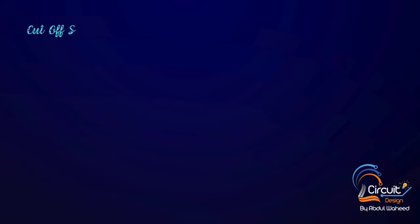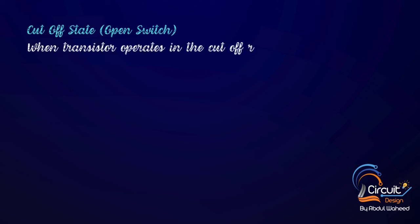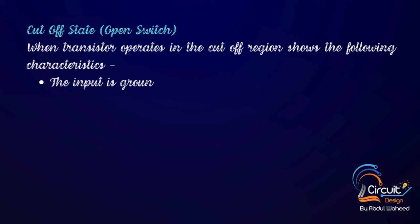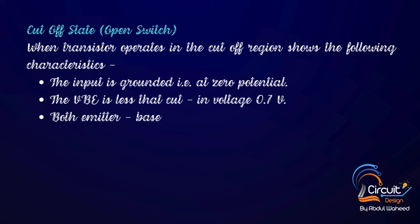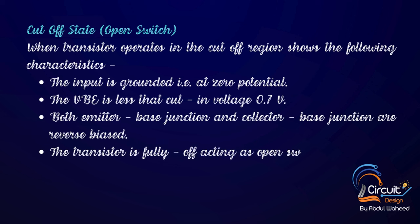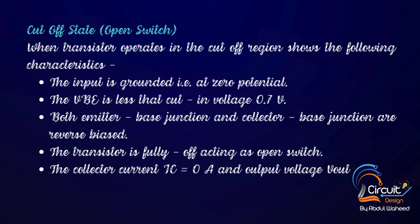Testing the circuit. Cutoff state open switch: when transistor operates in the cutoff region, it shows the following characteristics. The input is grounded, that is at zero potential. The VBE is less than cut-in voltage 0.7 volt. Both emitter base junction and collector base junction are reverse biased. The transistor is fully off acting as open switch. The collector current IC equals 0A and output voltage Vout equals Vcc.